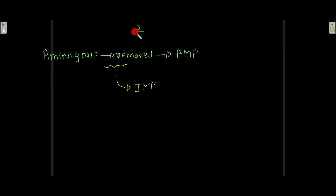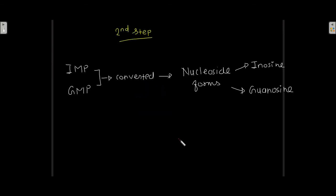In the second step, IMP and GMP are converted into their nucleoside forms — inosine and guanosine respectively. Inosine is the nucleoside form of IMP, and guanosine is the nucleoside form of GMP.